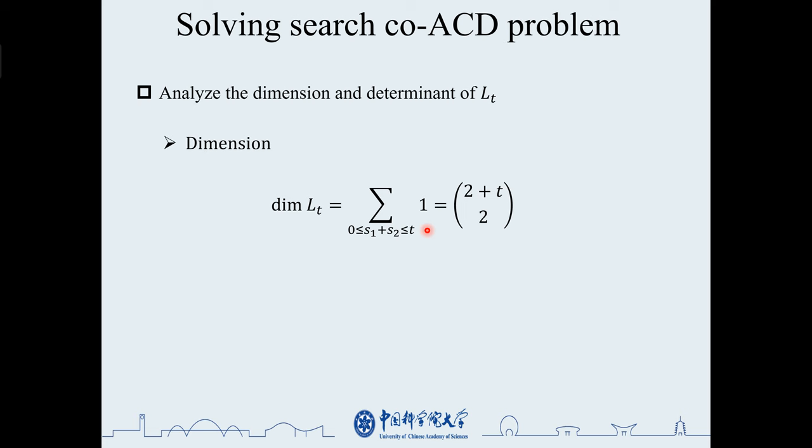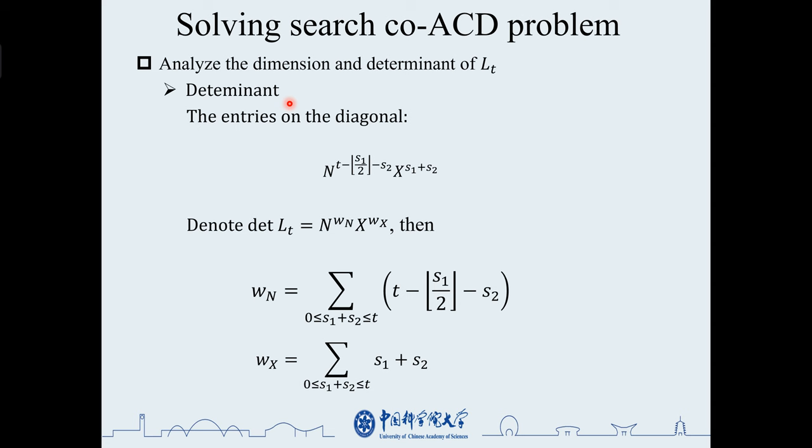Regarding the calculation of the determinant, since the basis matrix is lower triangular, we can just focus on the elements on the diagonal. Wn and Wx for powers of n and x are the summation of powers in all cases.